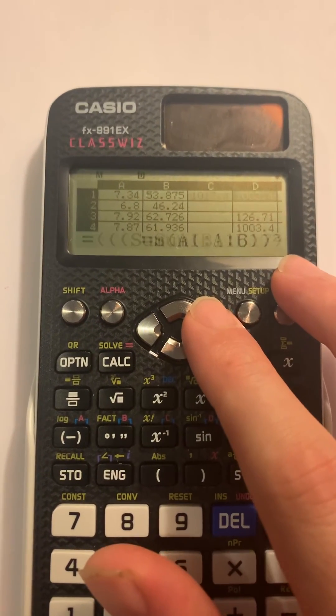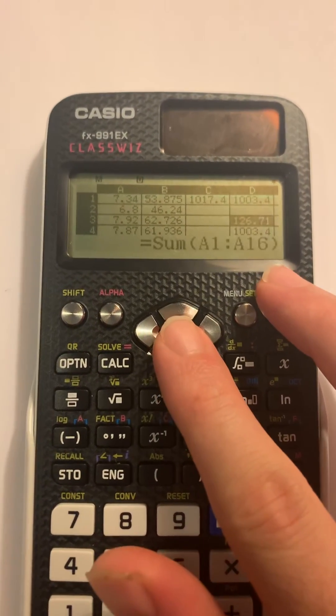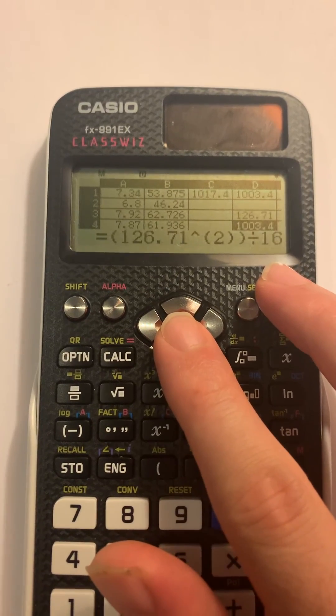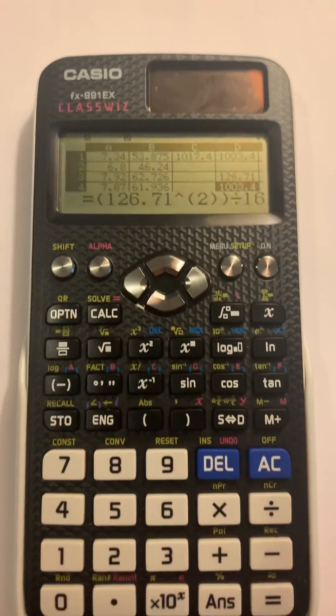And then take the sum of squares and also just to show you that it was working. So that's my square sums. Thanks.